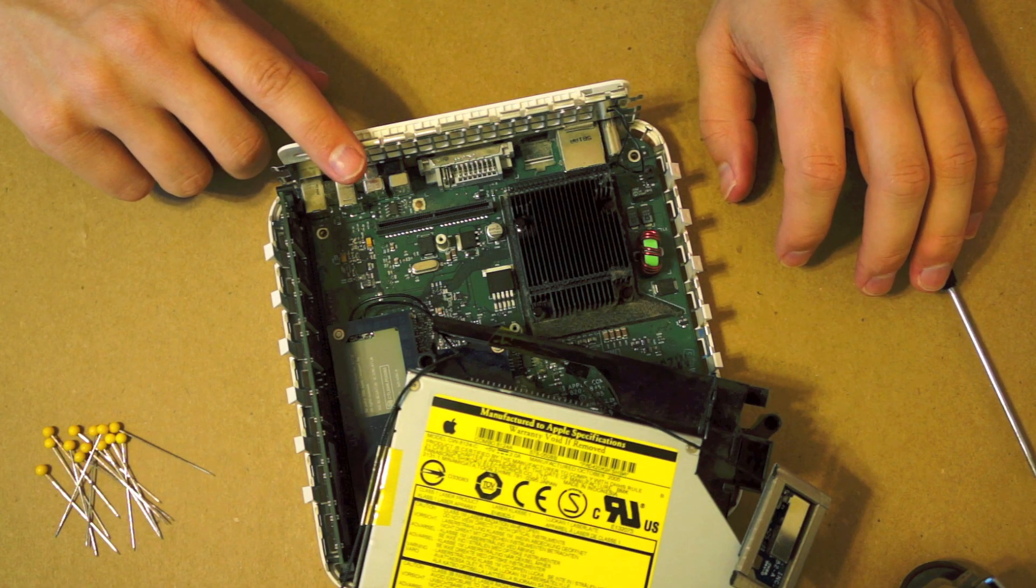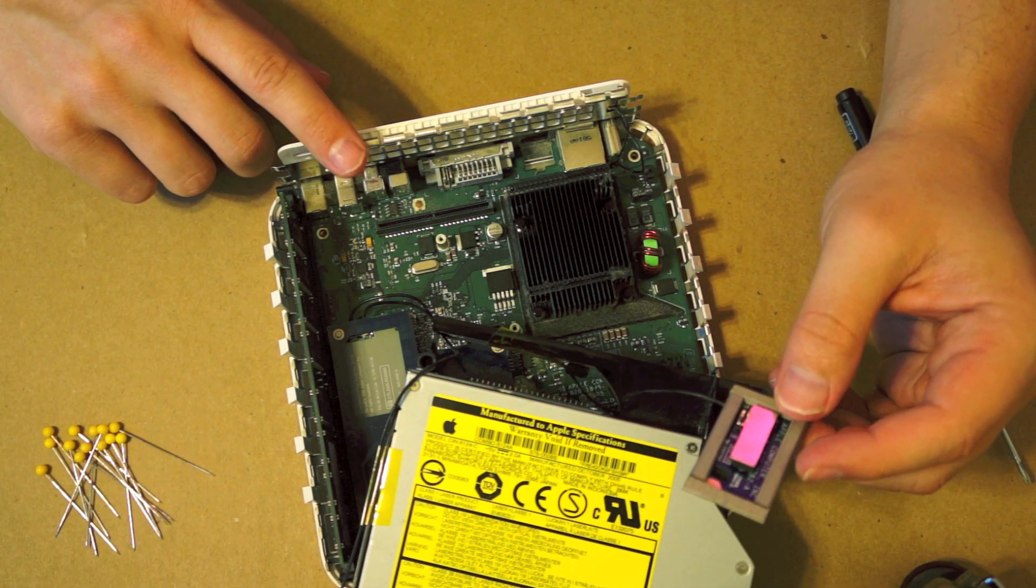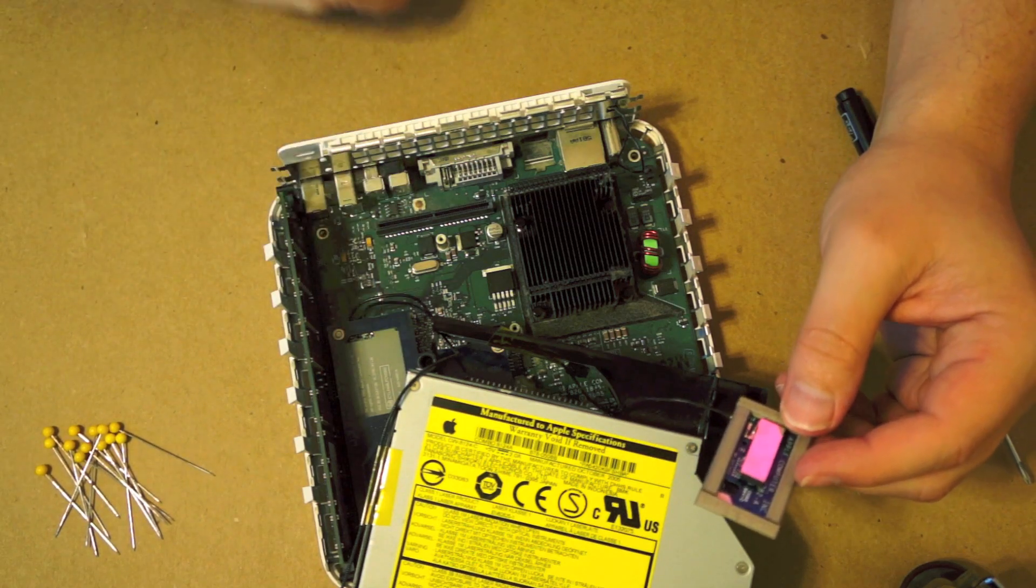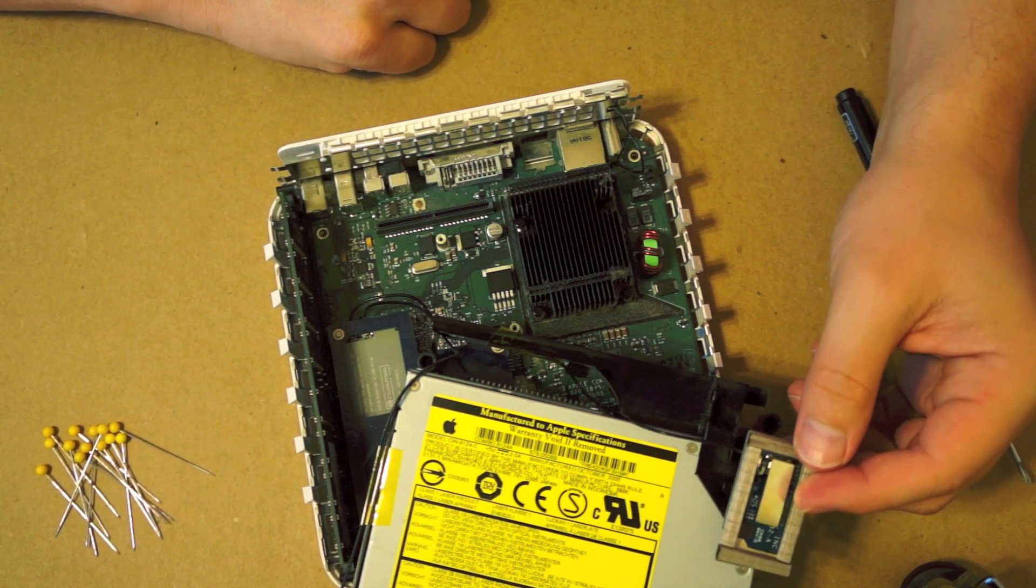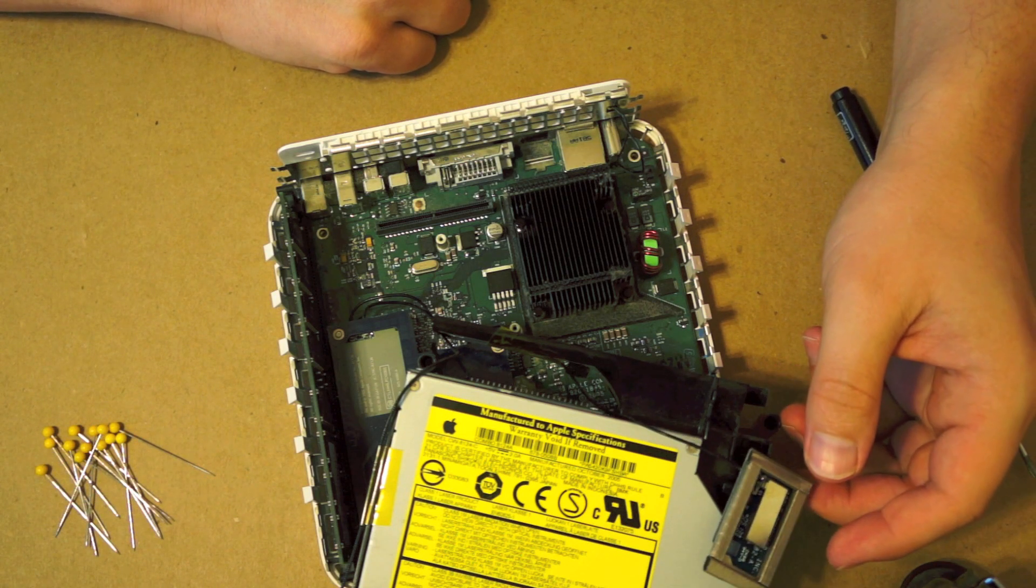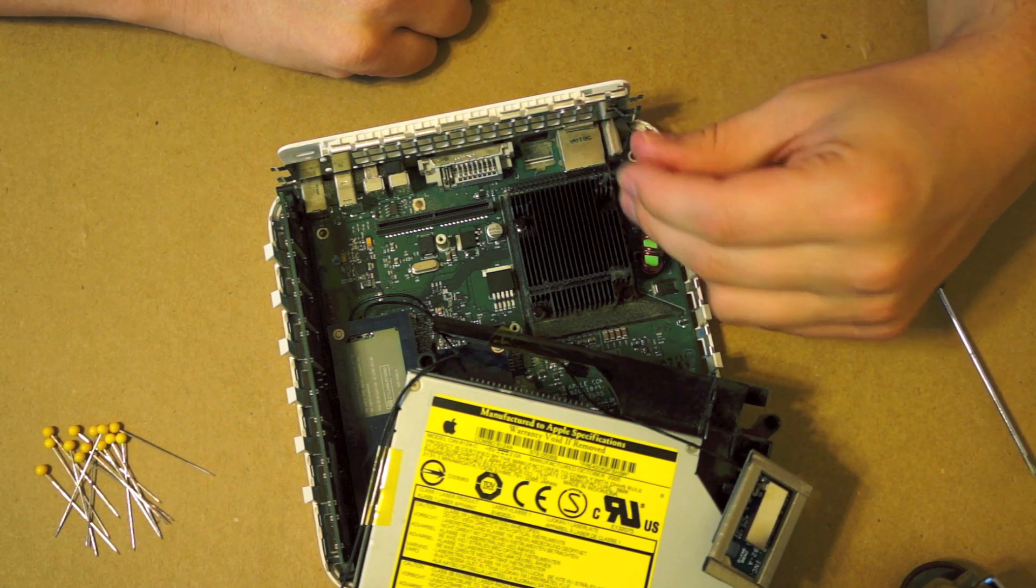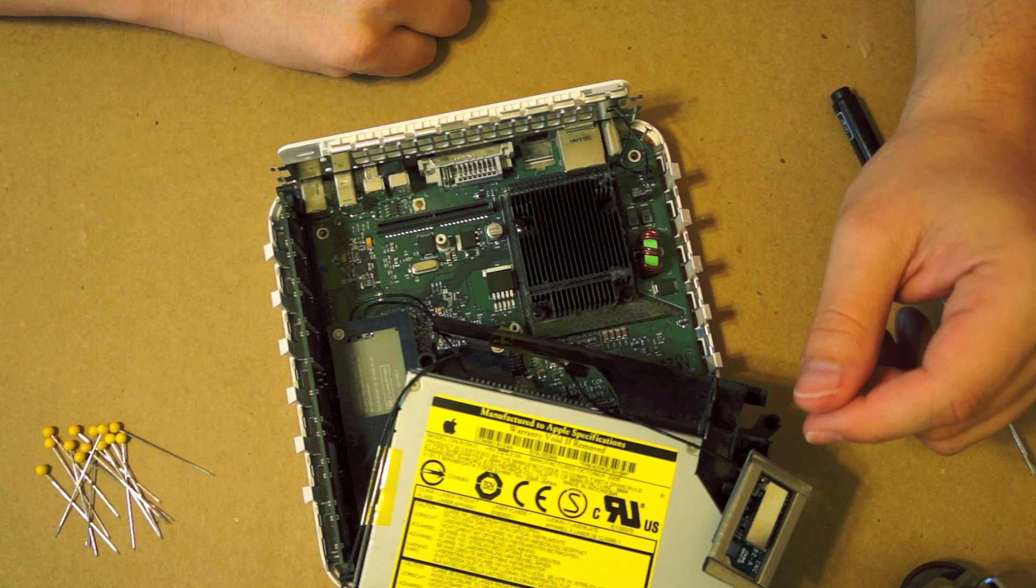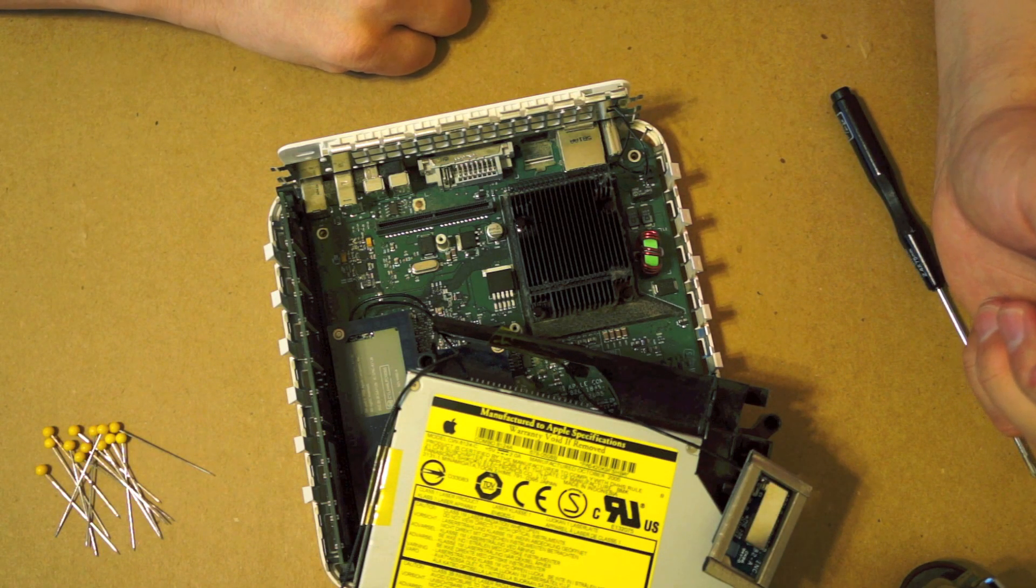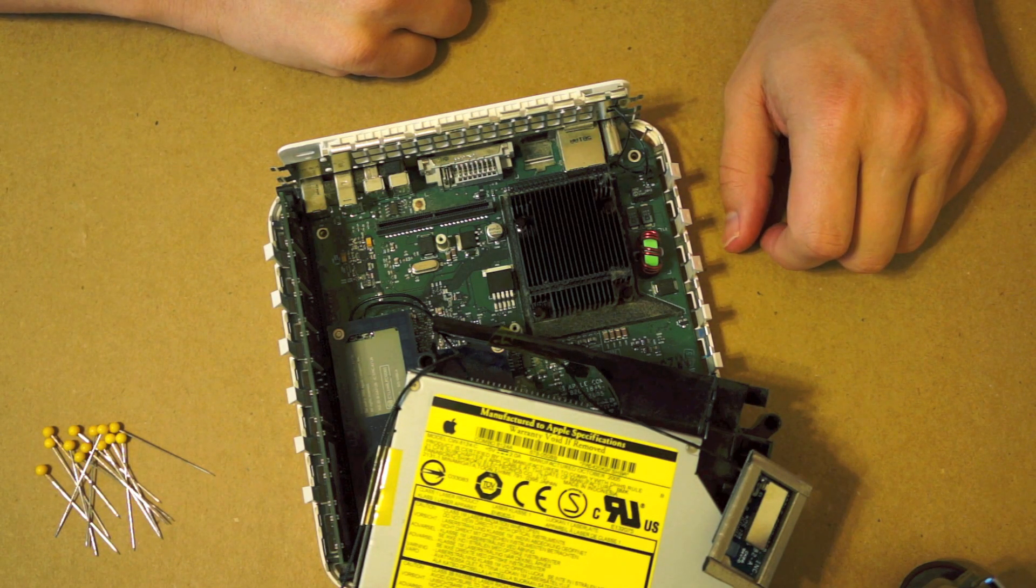So that just means that this thing itself is probably shot, or this card here is shot. In either case, it probably cost more to replace it than to get a new one. I don't know yet, I have to check. Well, the rest of the computer works fine. It just doesn't have internet access. And for a teenager that's a fate worse than death, right?